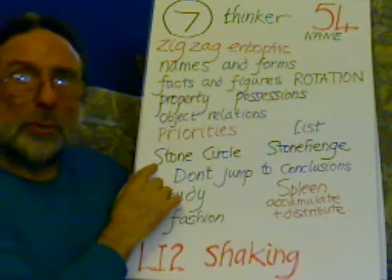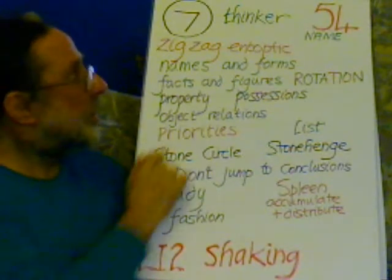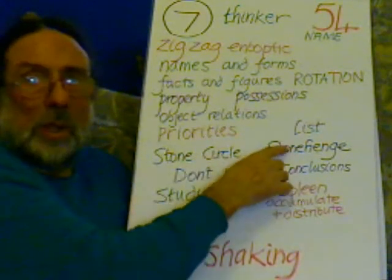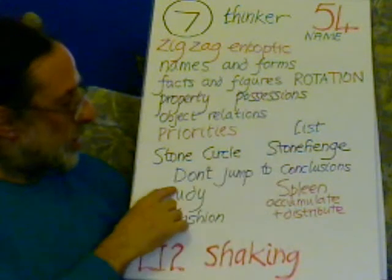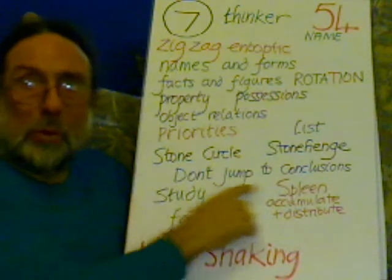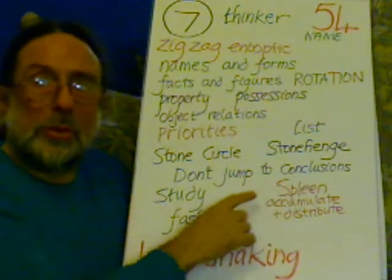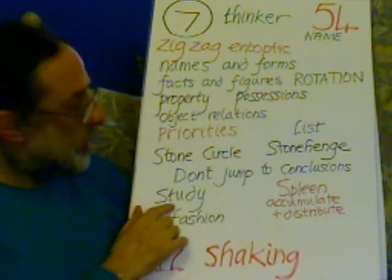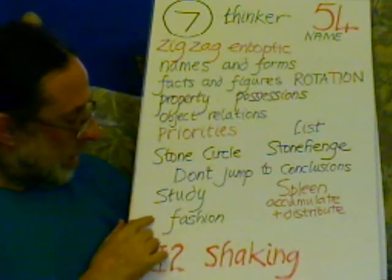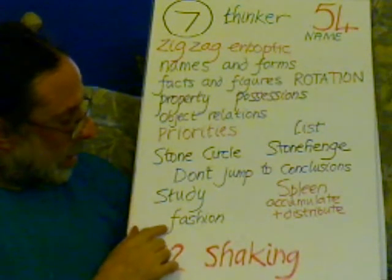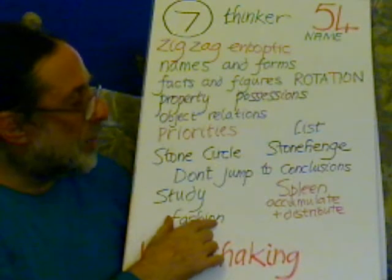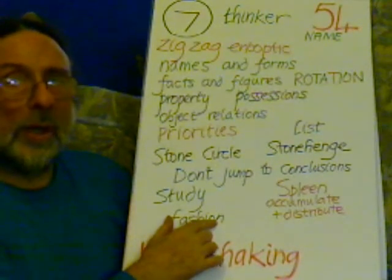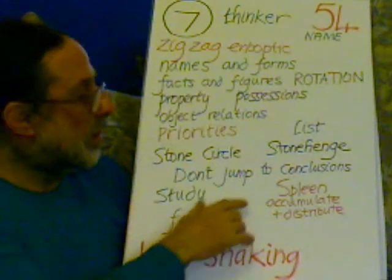A stone circle, this is from the mineral — a stone circle, like Stonehenge. But don't jump to conclusions; study. And there's fashion, a lot of ideas and forms in this fashion.